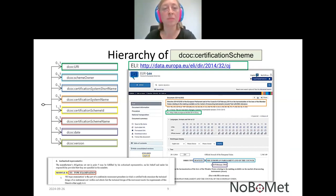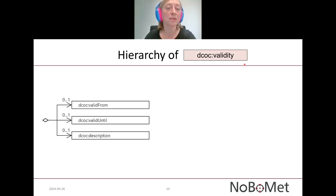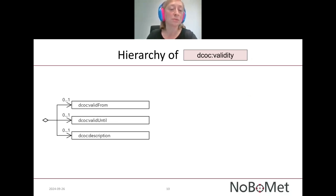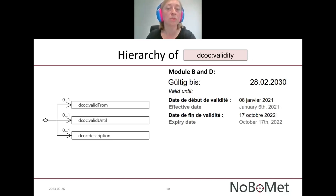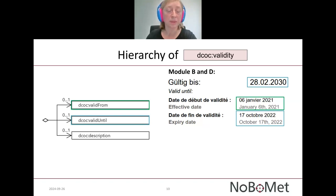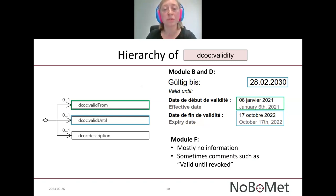Now let us look at the second example: a superordinate element called 'validity.' Using these elements, validity-related information within a certificate can be described. Depending on certification schemes, there are different provisions regarding validity. For example, within Module B or Module D, it is prescribed to add validity begin and validity end — realized within the DCOC data structure by using the elements 'valid from' and 'valid until.' Within Module F, it is sometimes not needed to provide any validity information, or validity information shall be provided in free text form — realized by using the element 'description.'